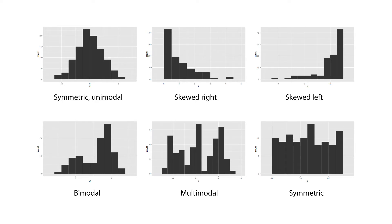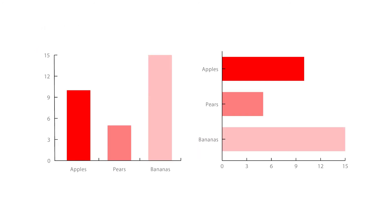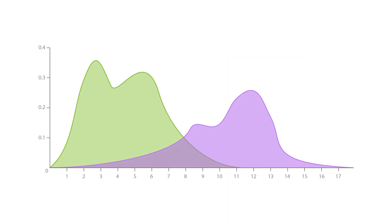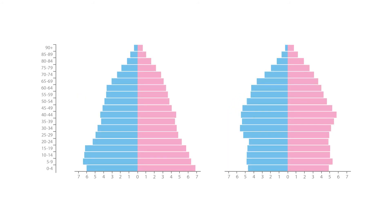Charts similar to a histogram are a bar chart, density plot, and a population pyramid.